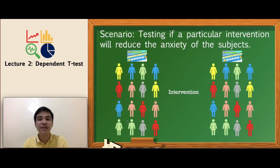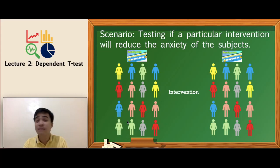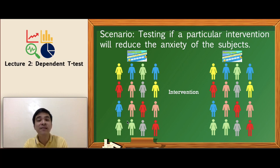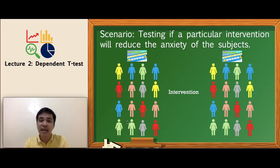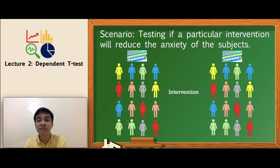Let us consider a social science related example. Suppose a researcher wants to test if a particular intervention will reduce the anxiety of the subjects. The same participants will be used in this study. Using a standardized anxiety scale, you obtain their anxiety level before, you introduce the intervention, and then you obtain their anxiety level after. The participants before are the same participants after.